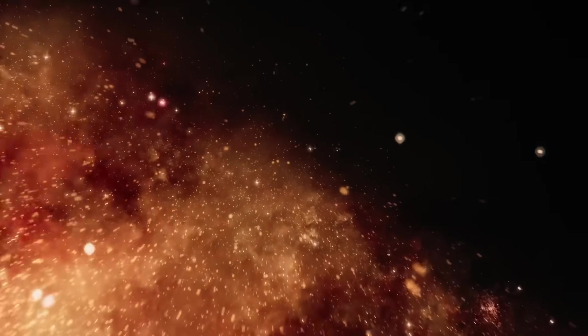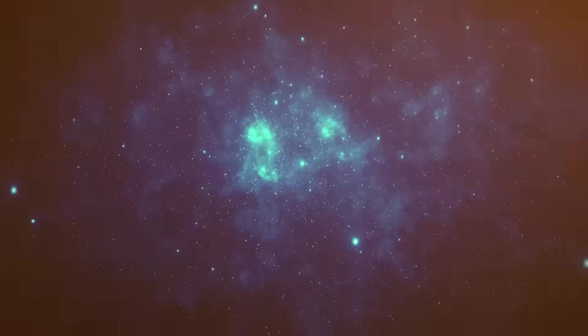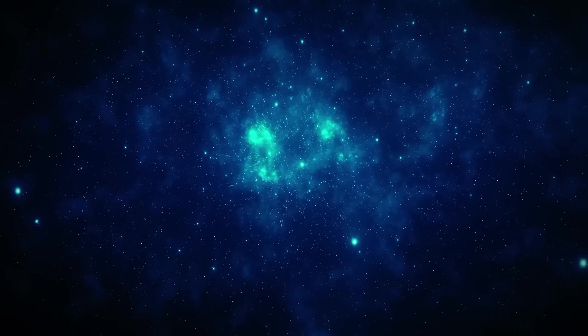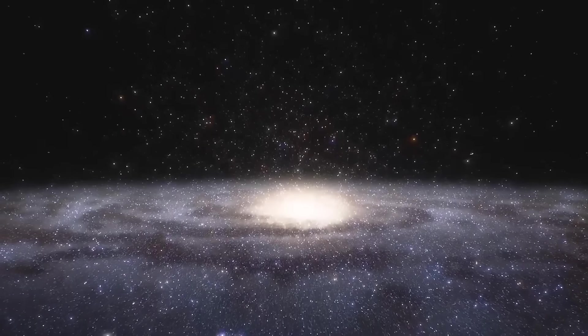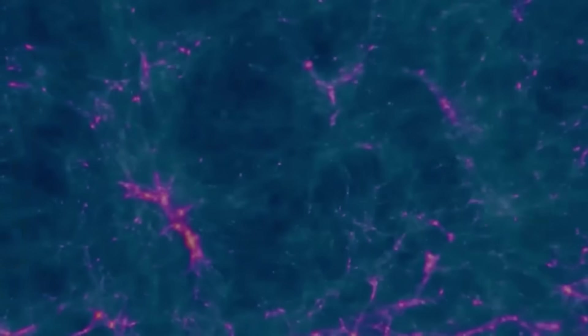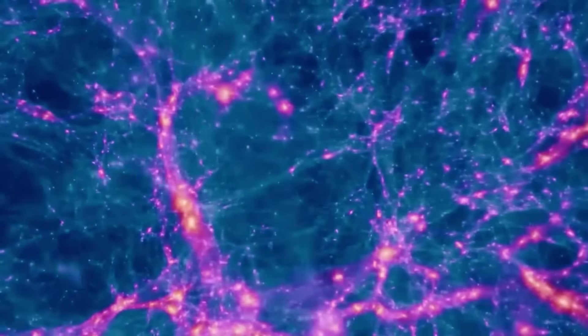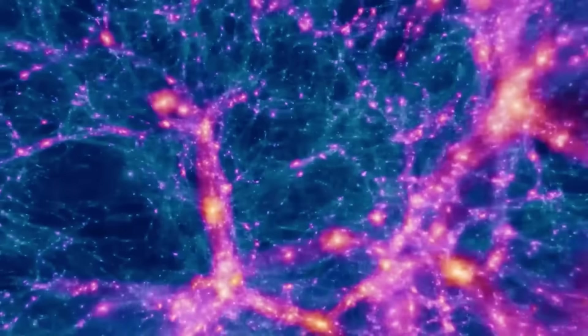The picture was faint, distorted by the limitations of Voyager's aging camera systems, yet it carried features that should not be there. Instead of the black, featureless backdrop of interstellar space, the image showed oscillating bands of light and shadow, symmetrical curves, and repeating nodes that looked less like noise and more like architecture.